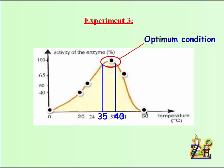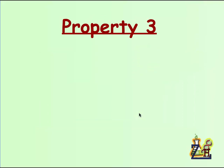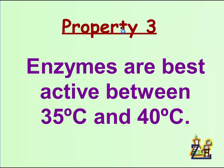But if we increase the temperature to 60 degrees Celsius, the enzymes get destroyed. So even if we go back to 37 degrees Celsius, the enzymes will be destroyed. They will be broken down. There will be no, as if there is no enzyme, so there will be no digestion. Here we can go to the third property, which is enzymes are best active between 35 degrees Celsius and 40 degrees Celsius.